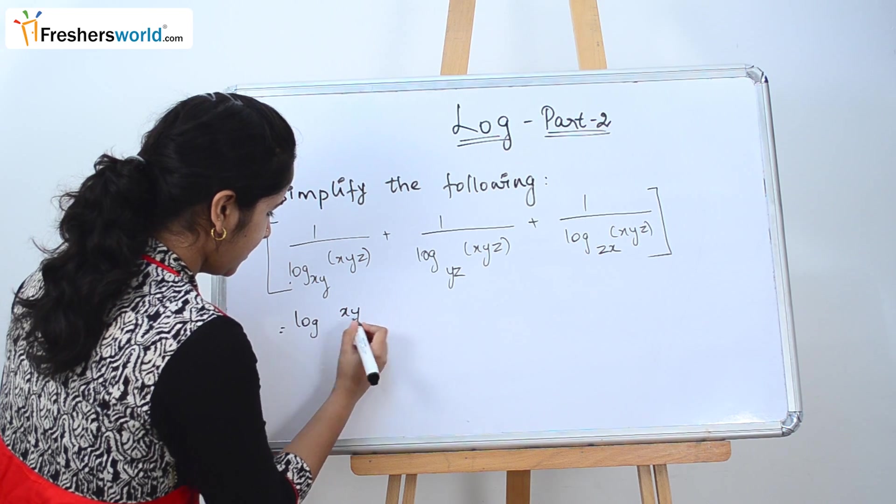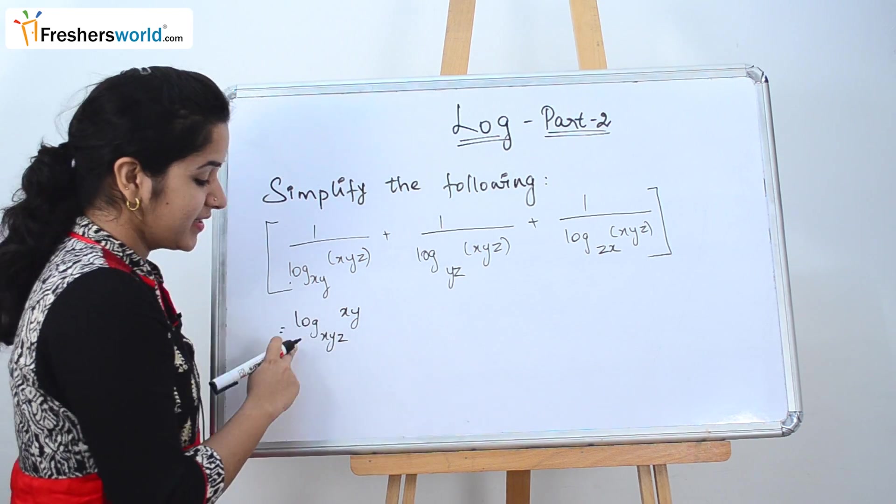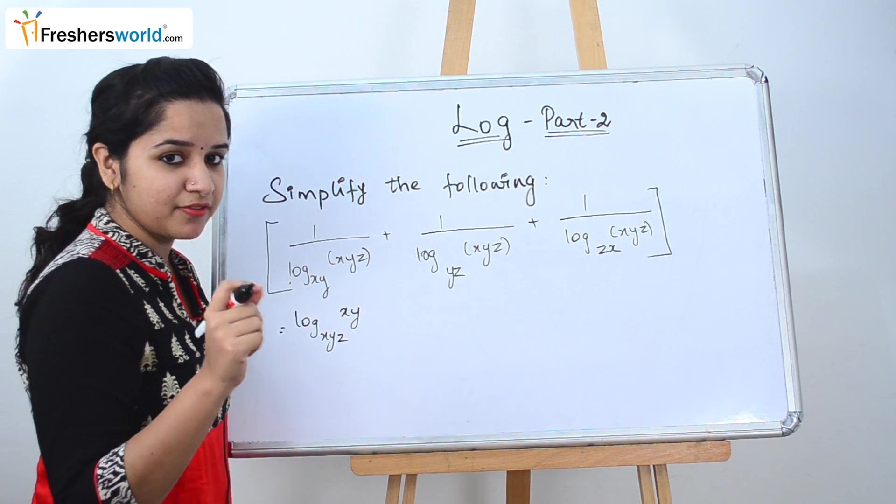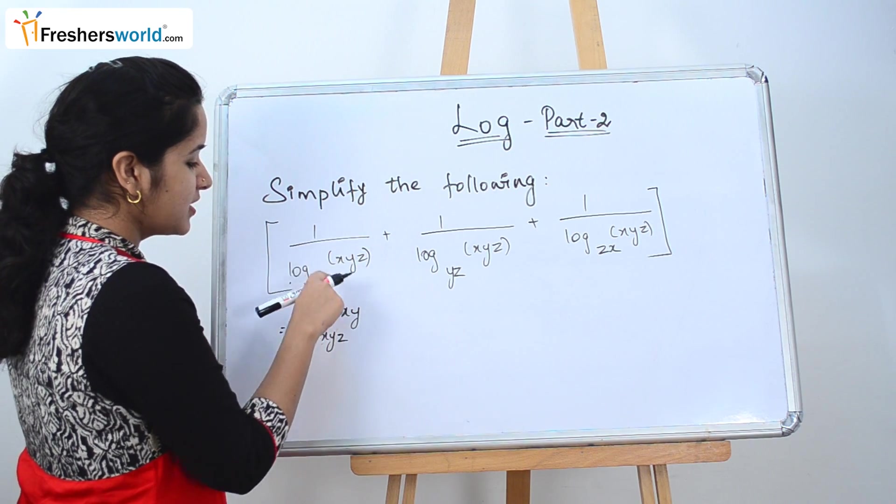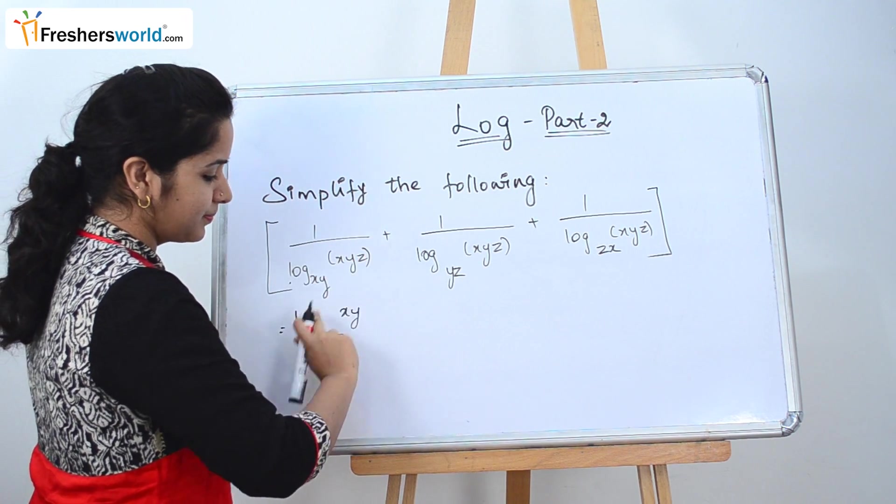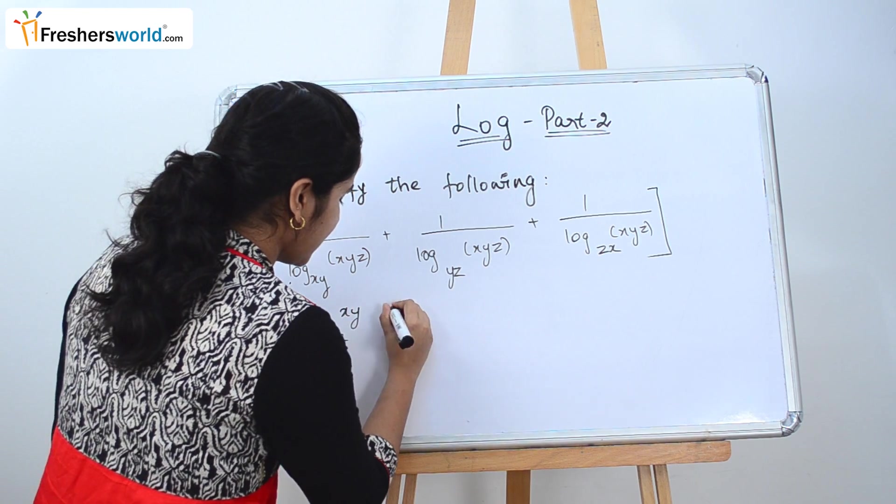Log_xyz(xy). So why is it like this? So we have seen it in our first video that if it's an inverse, when we take it above, the base and this place exchange. So that's why it is like that.